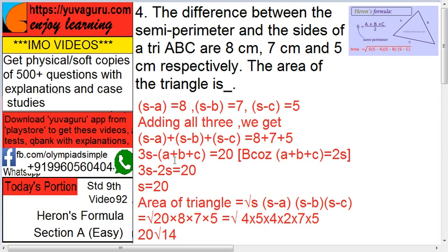Means this will be 2S. Therefore, 3S minus 2S equals 20. Therefore, S equals 20. Now you have got S, so area is what? Root of S into S minus A, S minus B, S minus C.